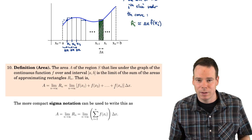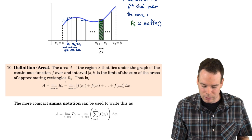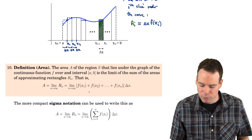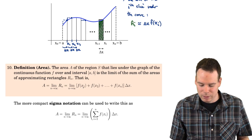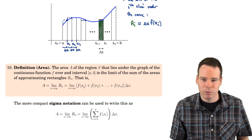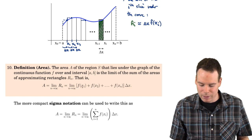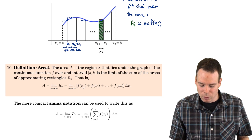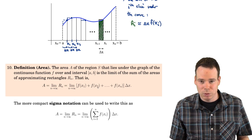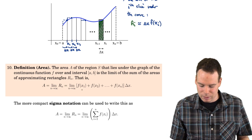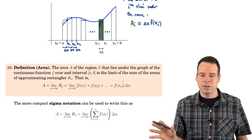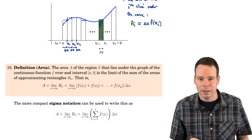What if we used L_n — the left-hand endpoints instead of the right-hand endpoints? The only part that would change is where we start taking the heights from. For the first interval, instead of f of x1 (the right-hand endpoint), we'd use f of x0. So one would change to 0, and instead of going up to f of x_n, we'd go up to f of x_{n-1}. It's just a shift to the left — that's the only change when using left-hand endpoints.